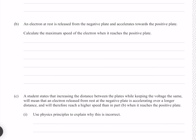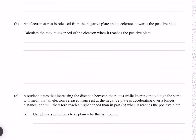An electron at rest is released from the negative plate and accelerates towards the positive plate. Calculate the maximum speed of the electron when it reaches the positive plate. The kinetic energy that the electron gains is going to equal the electric potential energy that it had. Kinetic energy is given by ½mv².